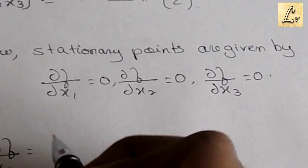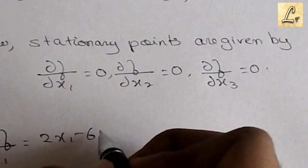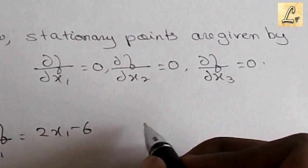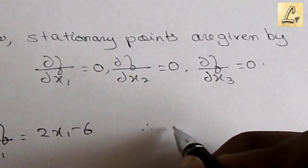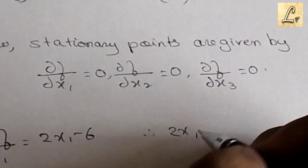We'll solve the first one by getting the partial derivative with respect to x1. From that, we get x1 equals 3.